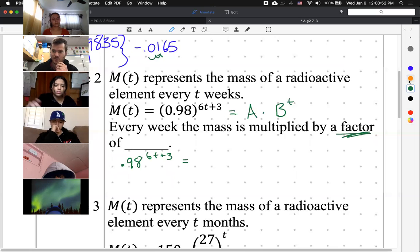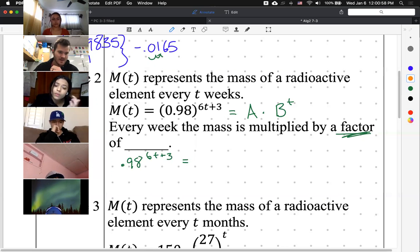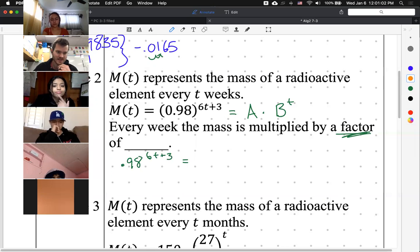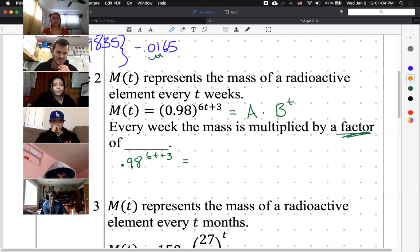Eventually, I need to convert this form into some number out front times some base to just the power of t. And then once I find that, what is B? So how do I convert this form into this form? And again, just use your rules of exponents. Start with 0.98. 0.98 to the power of 6t plus 3. How do I break apart these two pieces? 6t plus 3. How would I do that using rules of exponents? Try to separate pieces as much as possible here.